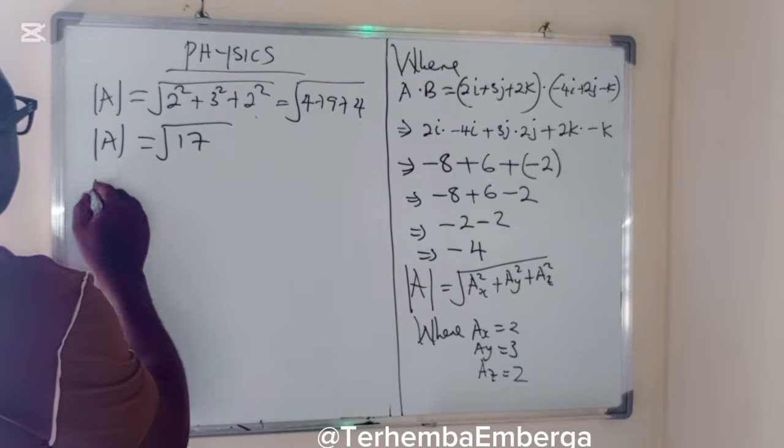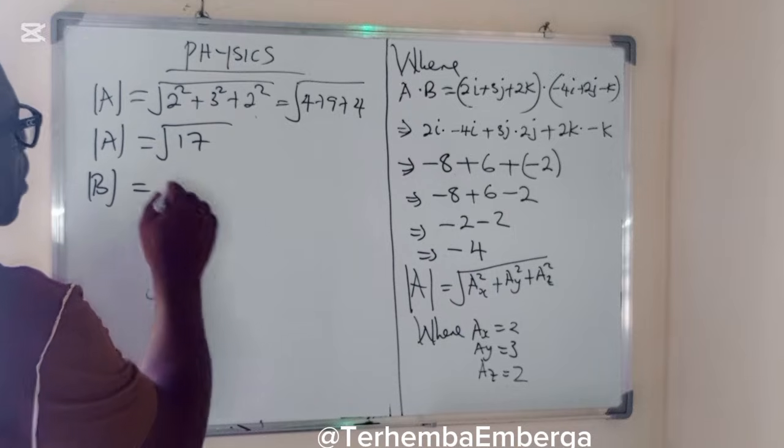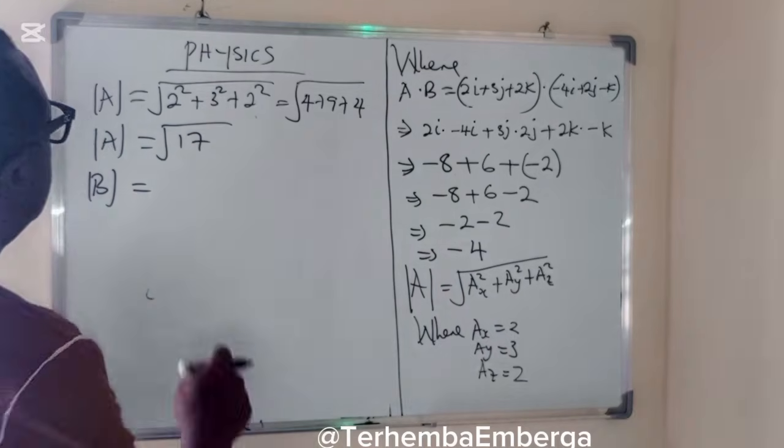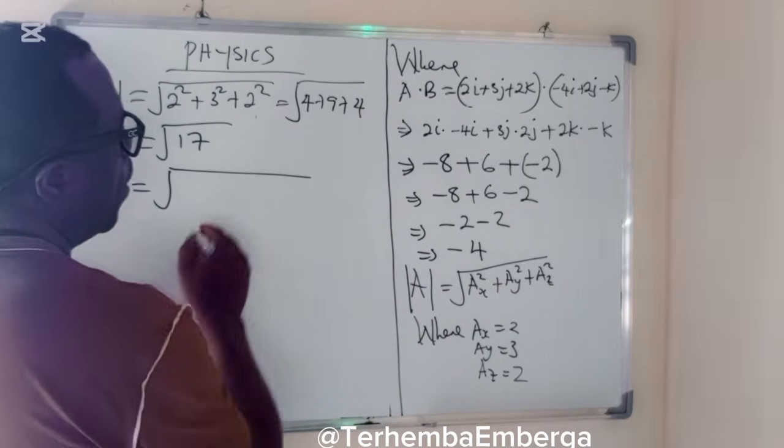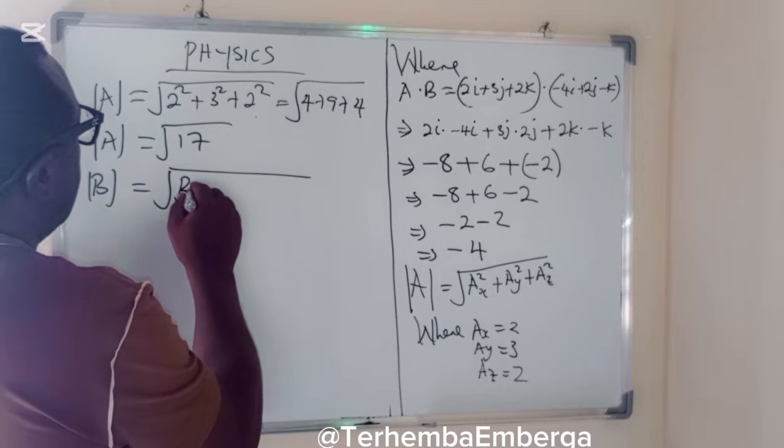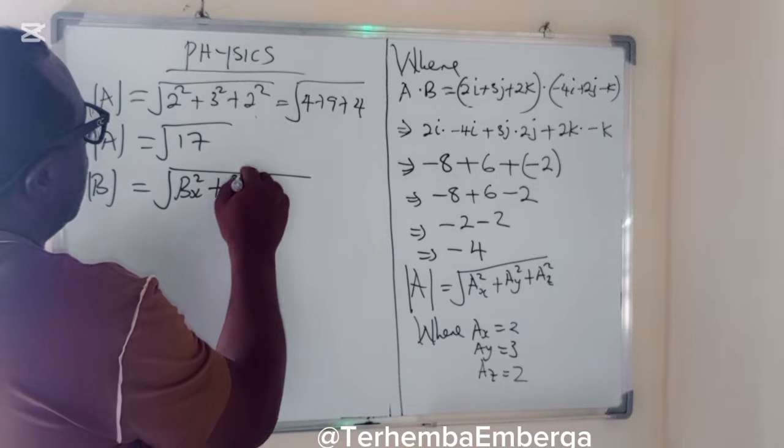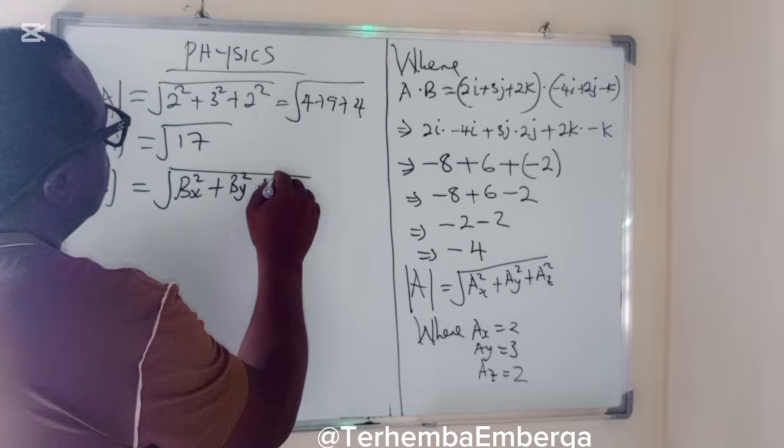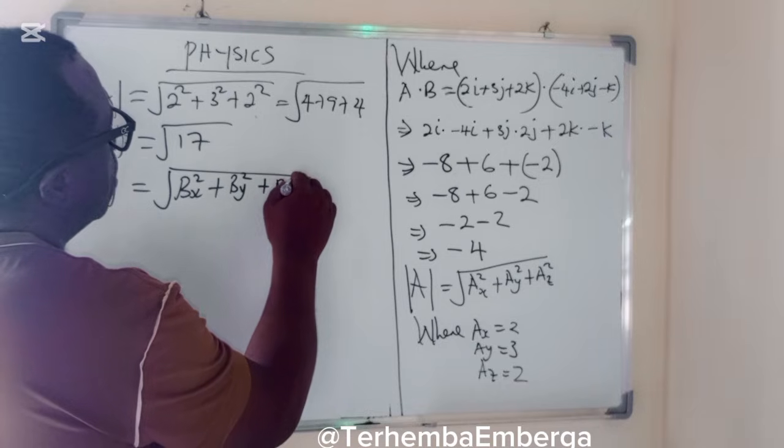Modulus of B, the same way, is the square root of B_x squared, B_y squared, plus B_z squared.